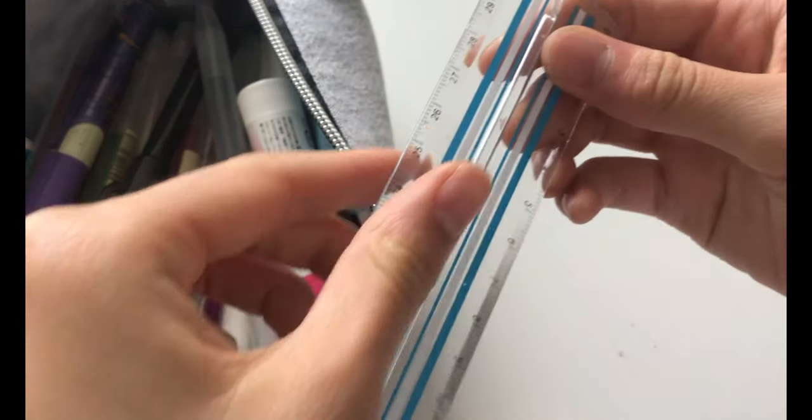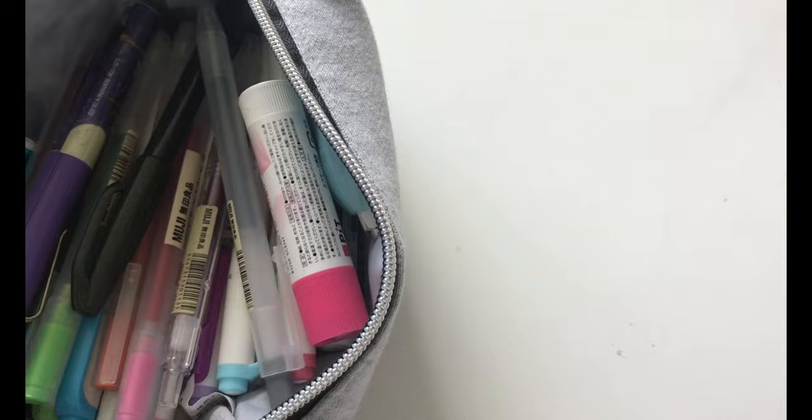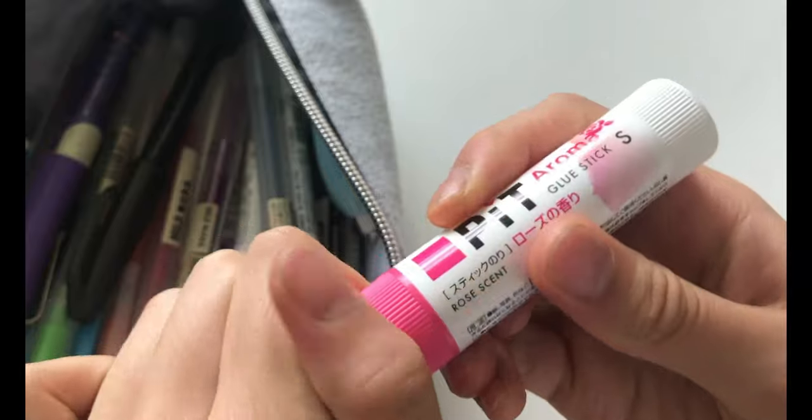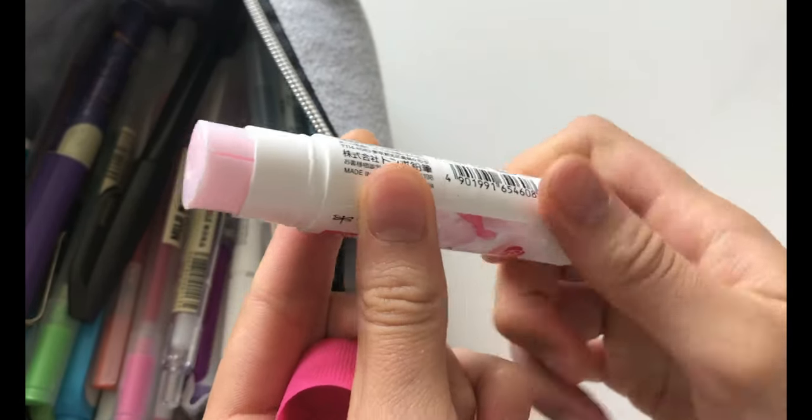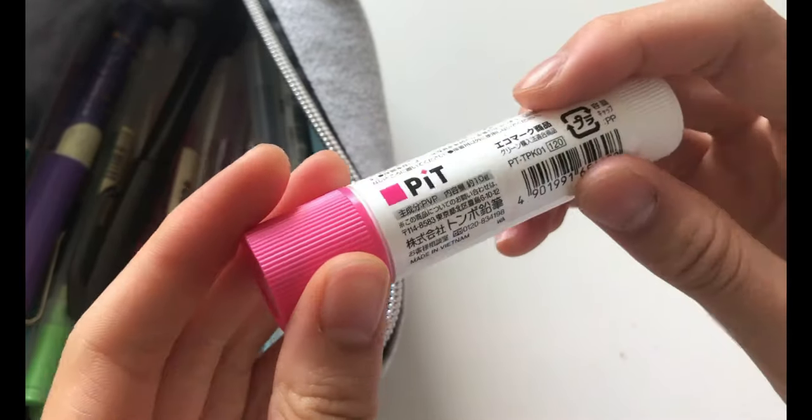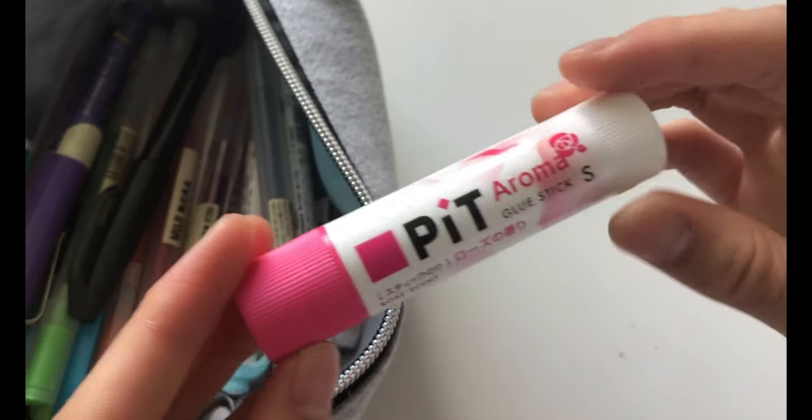The next item is just an ordinary foldable ruler by Daiso. The next item is the Tombow Pit glue stick. So this is from the Aroma line and it is in the size small. So this glue stick is supposed to smell like rose, but for me, it smells like liches. But it smells really nice, so I would definitely recommend this glue stick.